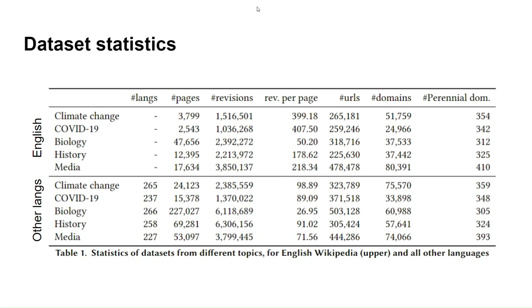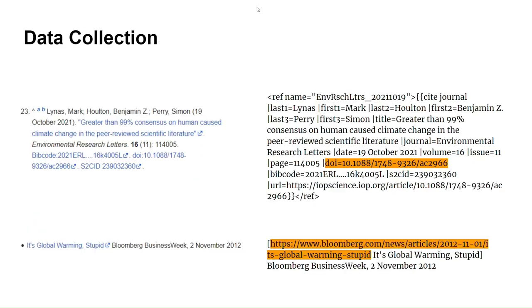For data collection, we selected a few topics such as climate change, COVID, and history. For all of these topics, we find all the relevant pages, and then for all these pages we go through all the history of revisions, looking for source identifiers, which can be a URL, a DOI code, an ISSN, and so on.